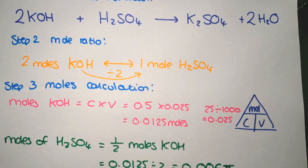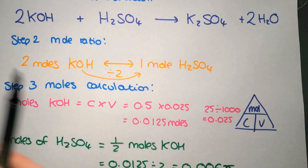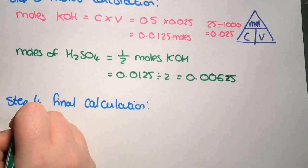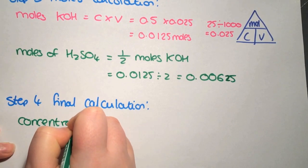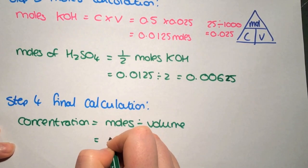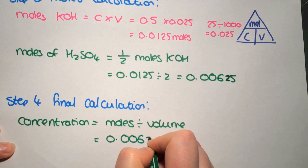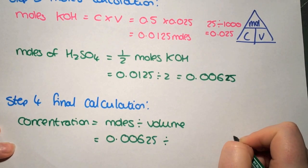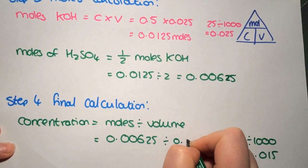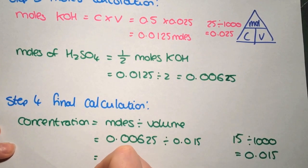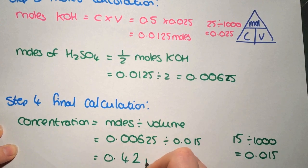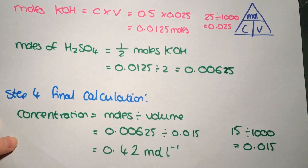We're now going to use the moles and the volume from the question to work out the concentration of H₂SO₄. Concentration equals moles divided by volume: 0.00625 divided by 15 cm³ — making sure it's in litres — gives a final concentration of 0.42 mol/L.